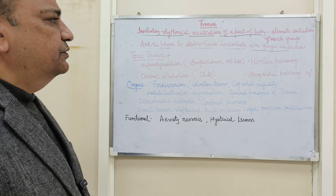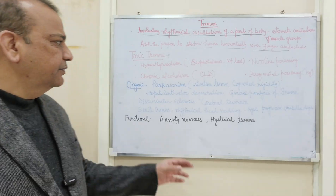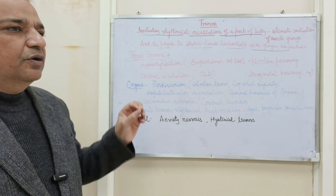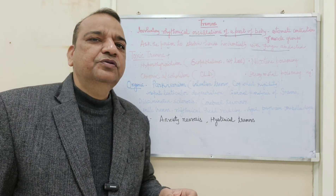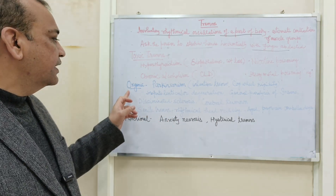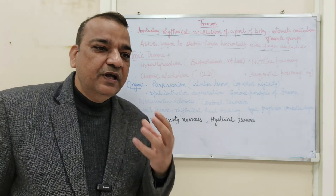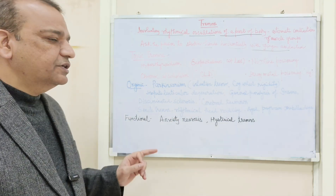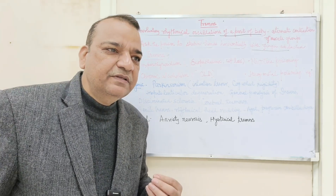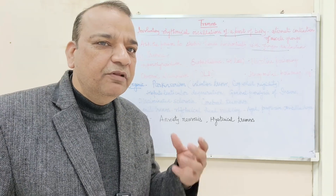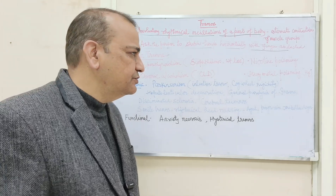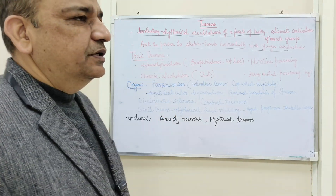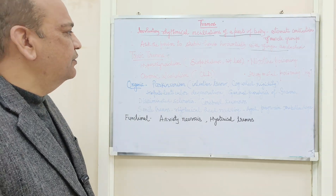So, what are the causes of these tremors? We can divide the causes of tremors into three categories. First are the toxic, which are caused by some sort of toxicity. Second is organic, means when an organ of the body is involved. Third is functional, where some disturbance in the function of the body occurs without involvement of any organ. First, let us discuss the toxic tremors where toxicity is the cause.